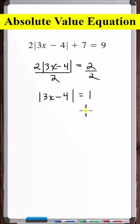Okay, now that we've got it to this point, we just apply what we know about absolute value equations. So this here is equivalent to saying that 3x minus 4 is equal to 1 or 3x minus 4 is equal to negative 1.